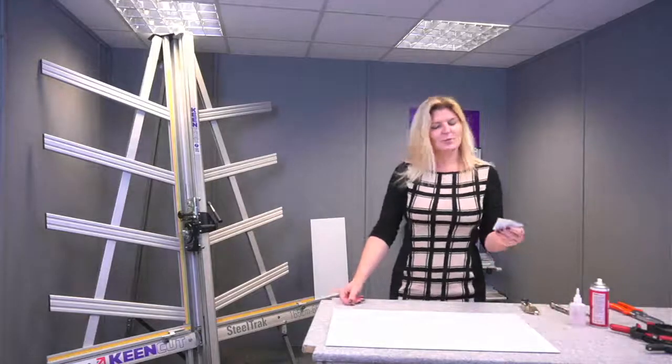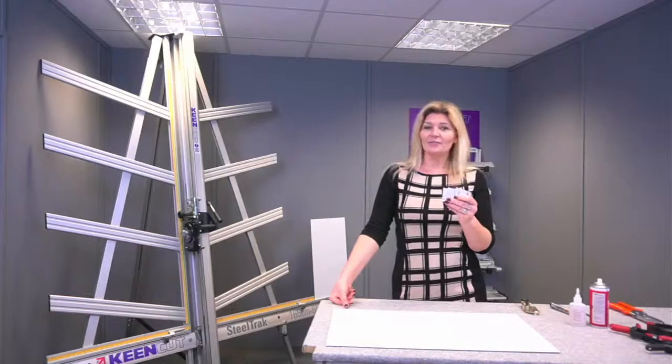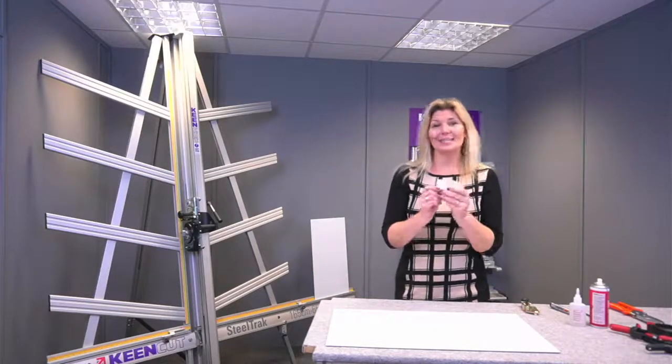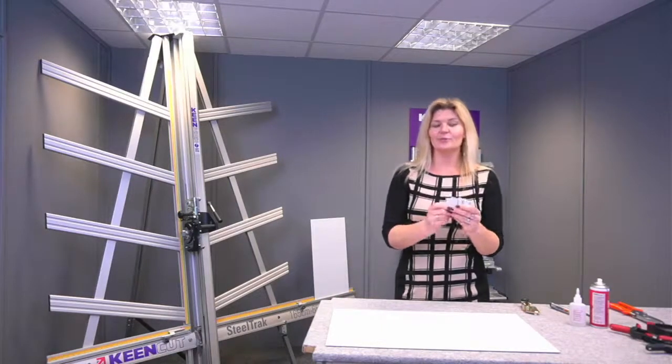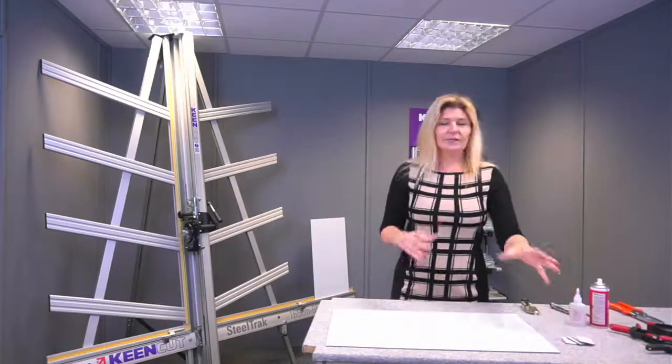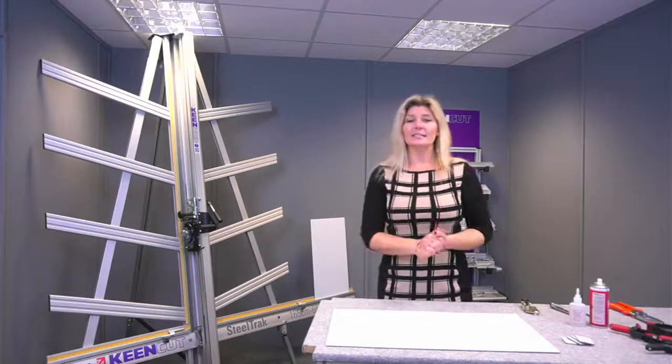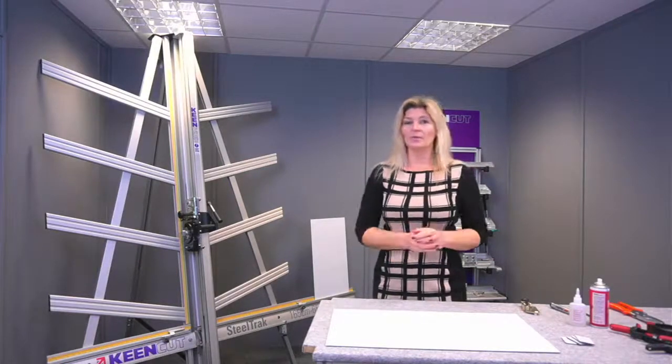And you will also be requiring some ACP offcuts. Now if you do have any offcuts and you're making a sign tray, please keep hold of these. They are very useful to reinforce the corners of your sign tray. If there are any questions going through the session, please do let Curtis know and we will address those as we are going along.